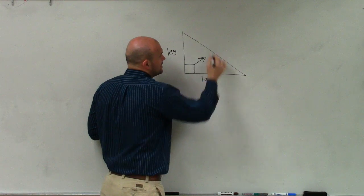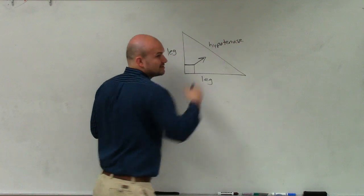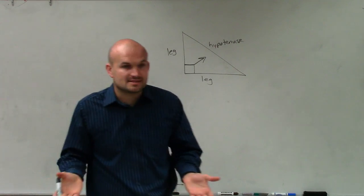And then your legs are what created the right angle. So that was a leg, that was a leg, and that was the hypotenuse. And we use that for the sides, correct?